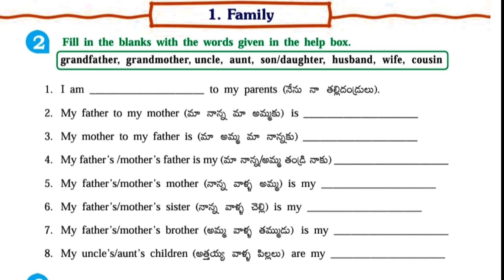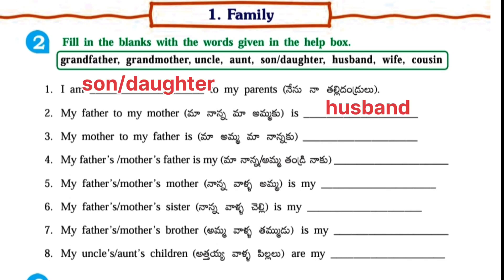Second one — Fill in the blanks with the words given in the help box. Here are some words given in the help box. You have to fill the blanks. First one: I am dash to my parents — Son or daughter.